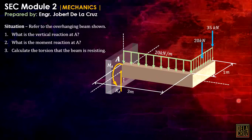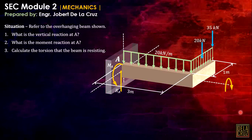If this is the y-axis, x-axis, this will be the z-axis — it depends on how you orient your axis. Torsion is just the moment about the longitudinal axis, and let's call that the torsional moment.